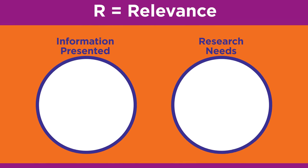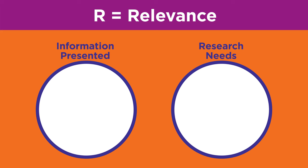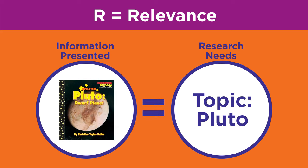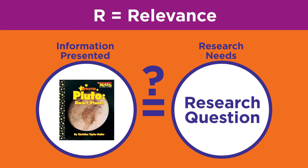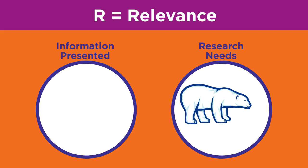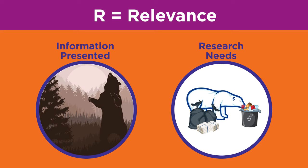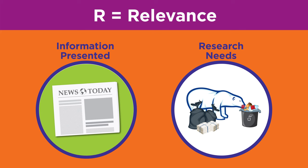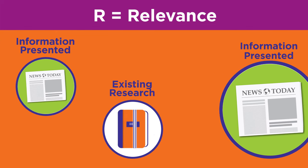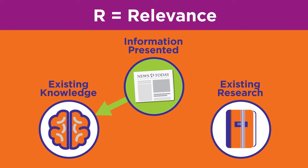The R in TRAP stands for relevance. Relevance means the information presented matches your research needs. Does the information relate to your research question? For example, if you're trying to find out if that student on the playground was right about polar bears eating people's garbage, then a site talking about grizzly bears in Yellowstone National Park may be interesting, but it will not answer your question. In this case, a site with current events from a newspaper or magazine could be better to answer your question about polar bears eating garbage.